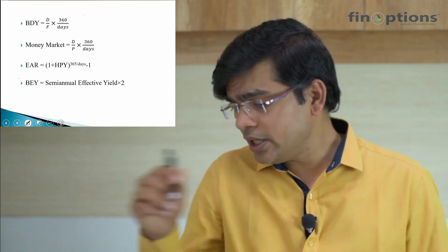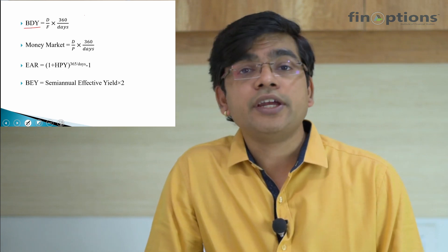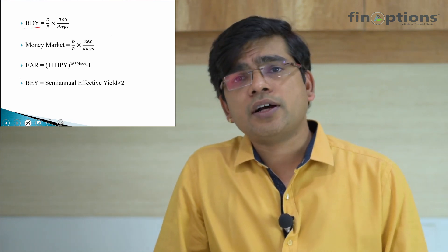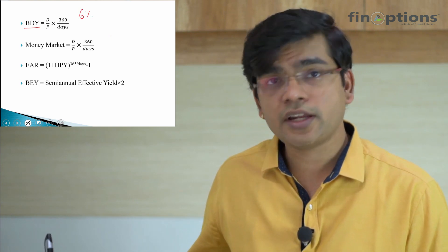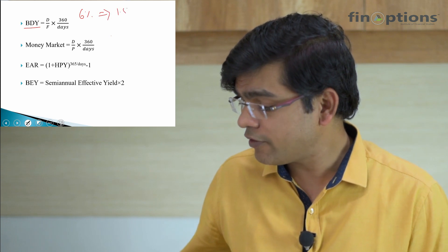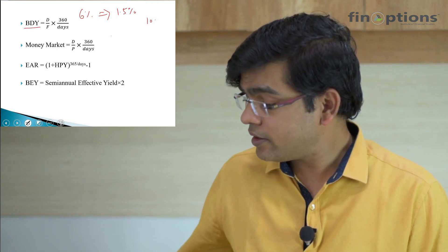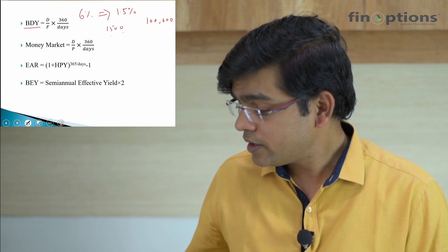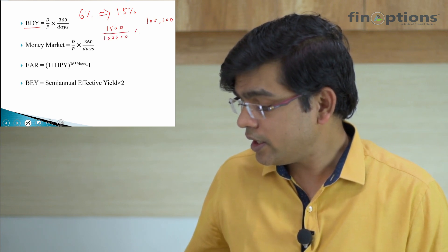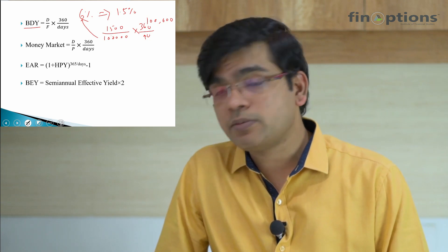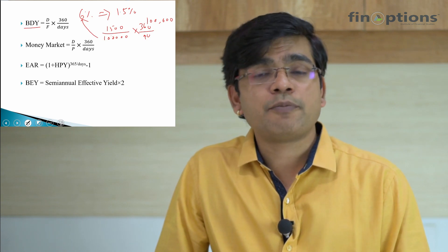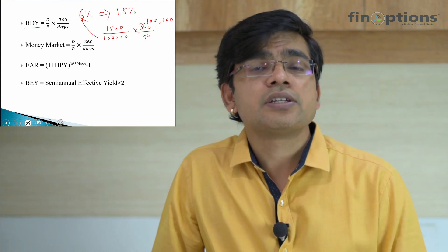Now let's cover different varieties of rates in U.S. markets for different securities. T-bills are quoted on bank discount yield (BDY), calculated as: discount divided by face value, multiplied by 360 divided by days. For a 90-day T-bill quoted at 6% annualized, that is 1.5% for 90 days. On a $100,000 T-bill, the absolute discount is $1,500. The face value is $100,000, and on an annualized basis the discount yield is 6%.